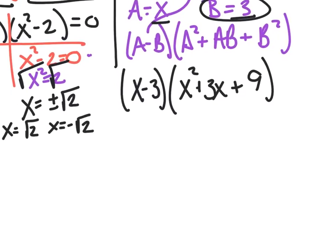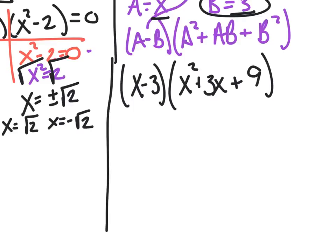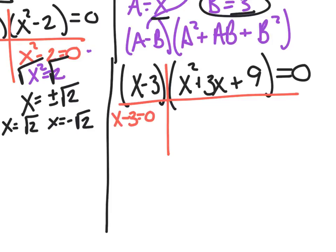Now I solve each piece. Setting x - 3 = 0 gives x = 3. For x² + 3x + 9 = 0, I can't factor it — options are 3 and 3 or 9 and 1, and none add to 3. The leading coefficient is 1 so completing the square is possible, but 3 doesn't divide evenly by 2, so I'll use the quadratic formula.